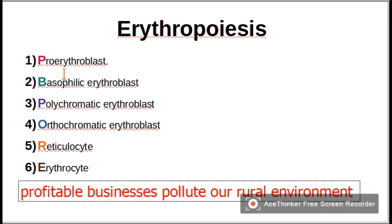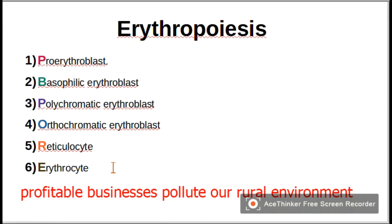From P you will remember proerythroblast. From businesses, B, you will remember basophilic erythroblast. From pollute, P, you will remember polychromatic erythroblast. From our, O, orthochromatic erythroblast. From rural, R, reticulocyte.